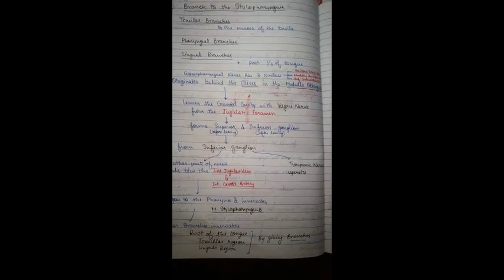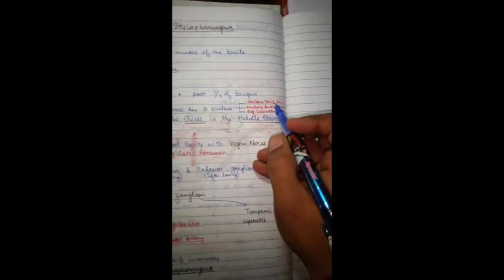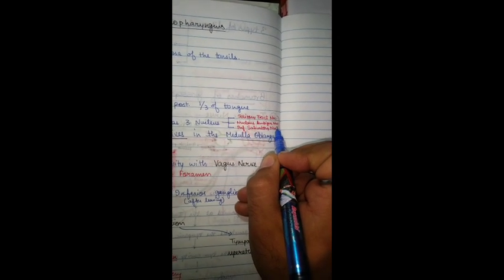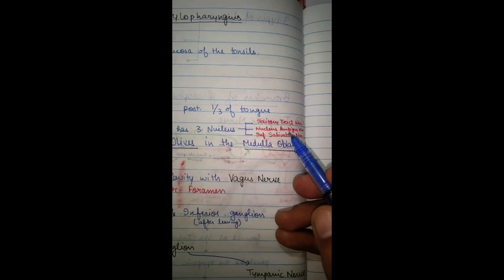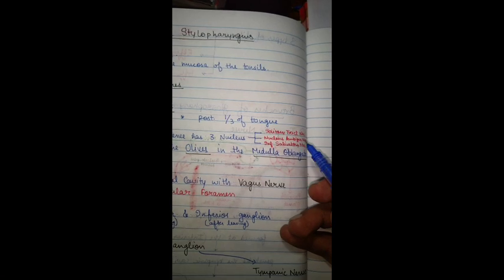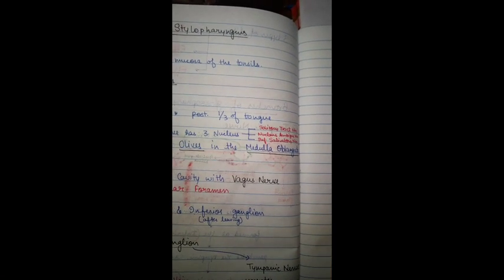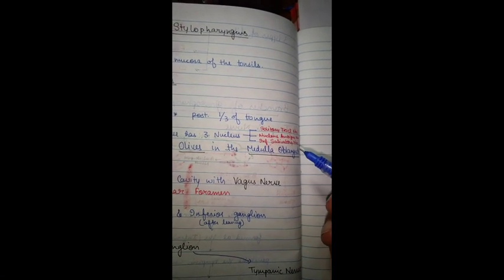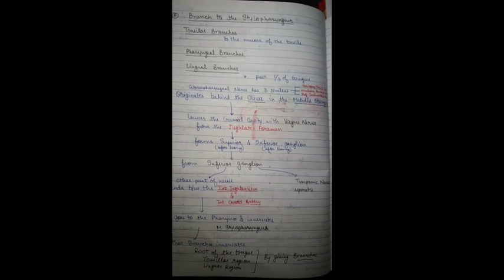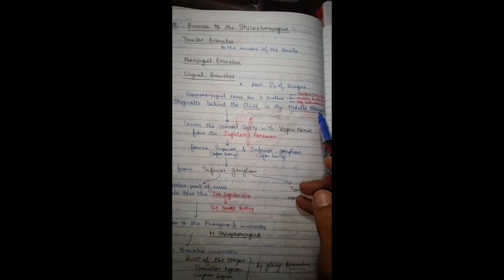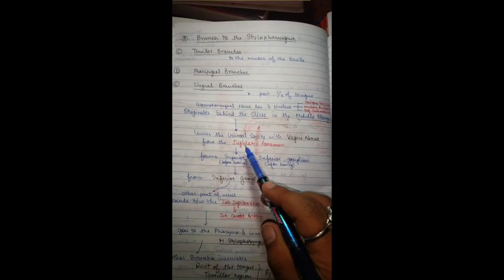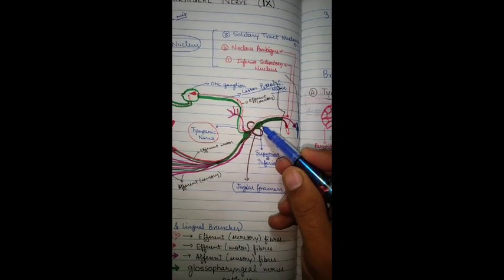Now we will learn through a flow chart. The glossopharyngeal nerve has three nuclei: the solitary tract nucleus, the nucleus ambiguus, and the inferior salivatory nucleus. The solitary tract nucleus receives all sensory innervation. The nucleus ambiguus sends motor fibers to innervate the stylopharyngeus muscle. The inferior salivatory nucleus sends secretory fibers through the tympanic nerve to innervate the parotid gland. The nerve originates behind the olives in the medulla oblongata and leaves the cranial cavity with the vagus nerve via the jugular foramen.